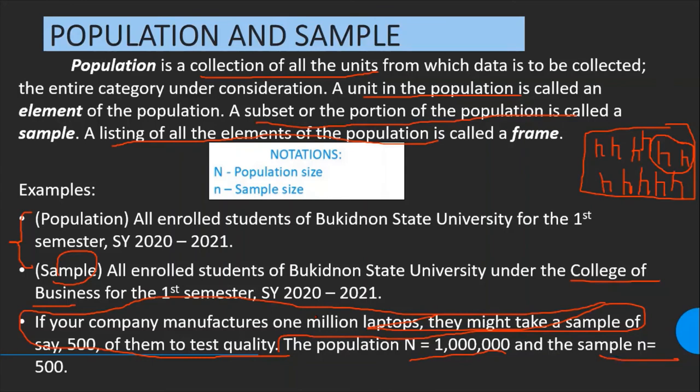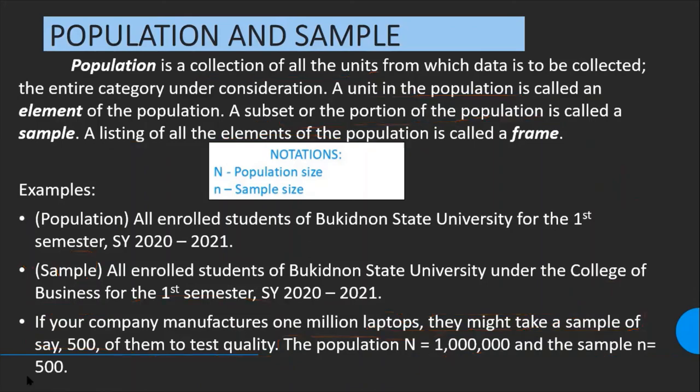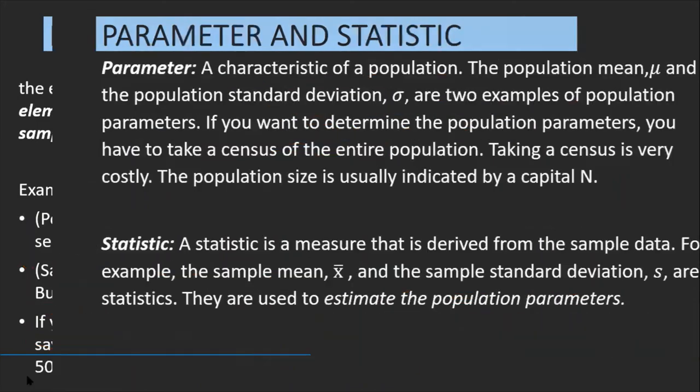One observation is that the sample is smaller than the population — or the population is larger than the sample.